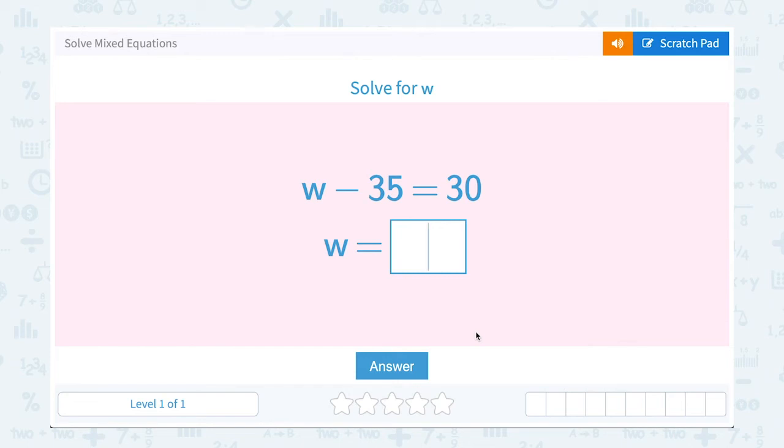Let's take a look at how to solve mixed equations. We want to solve for W, and our equation is W minus 35 equals 30. The rule is I can do anything I want to an equation as long as I do the same thing to both sides of the equation.